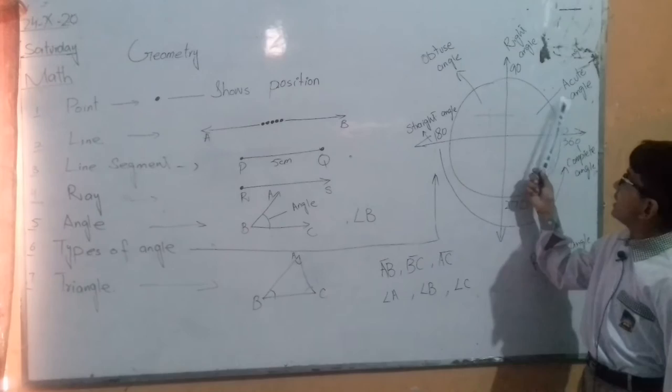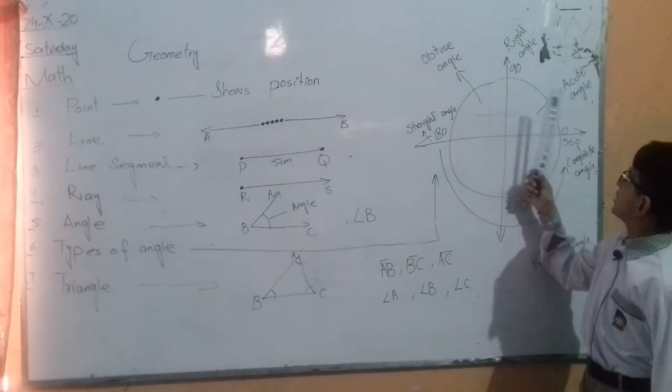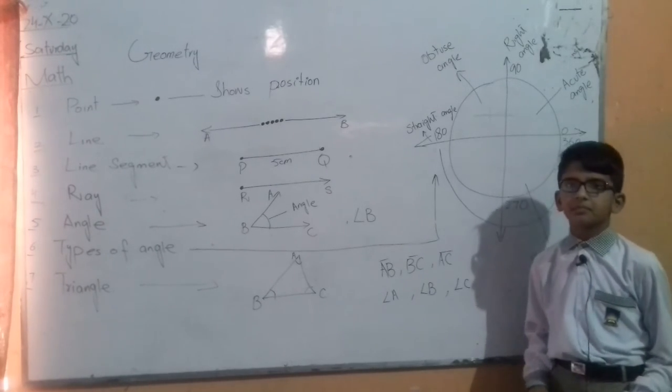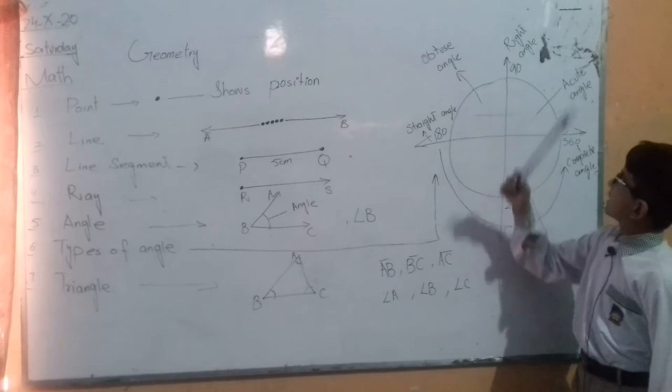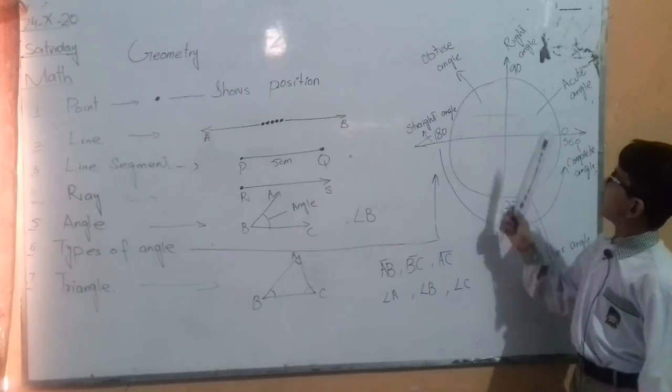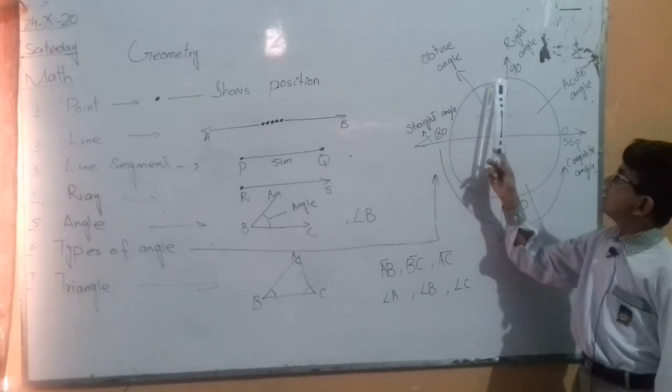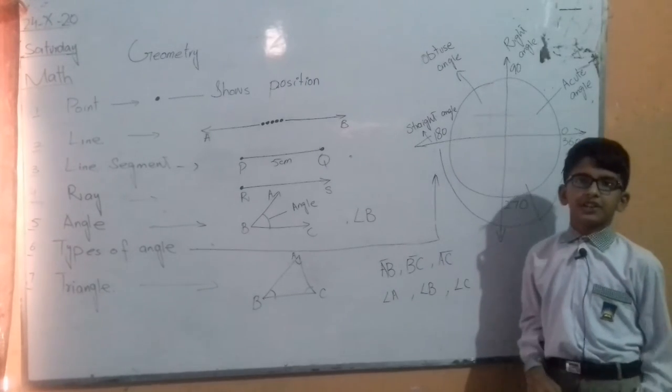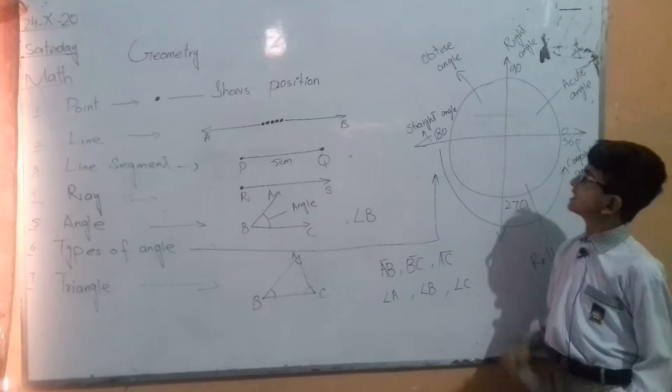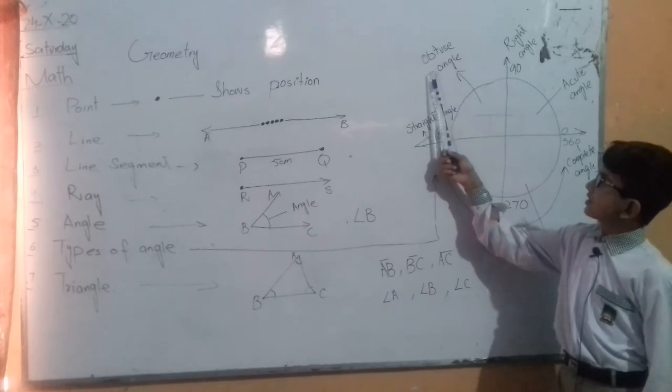The angle less than 90 degrees is called acute angle. Right angle. The angle of 90 degrees is called right angle. Obtuse angle. The angle greater than 90 degrees and less than 180 degrees is called obtuse angle.